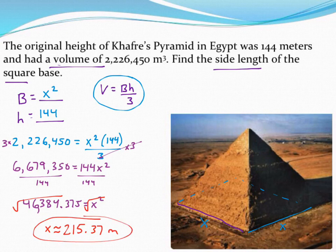Easy to check. Just go ahead and plug that number back in your formula. Find the area of the base, which would be about 215 squared. And then use your volume formula. Make sure it comes out to be about 2 million and whatever we said the volume was.